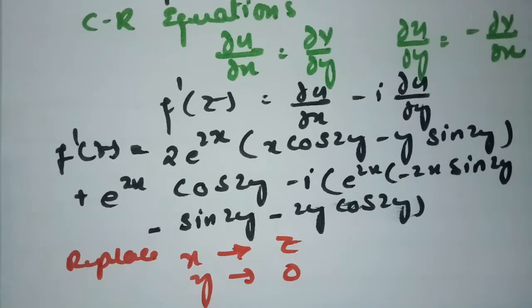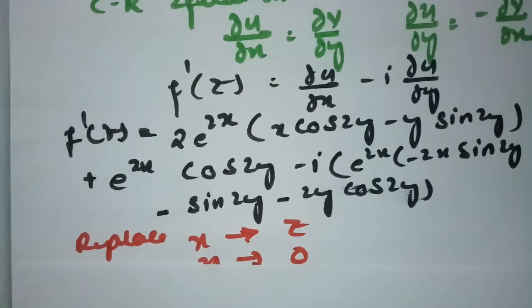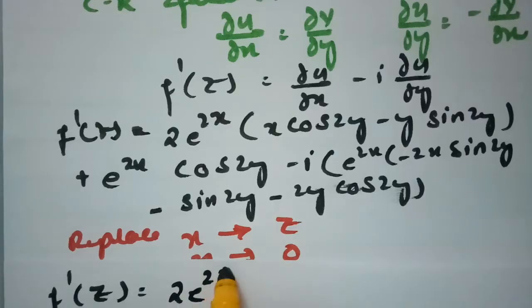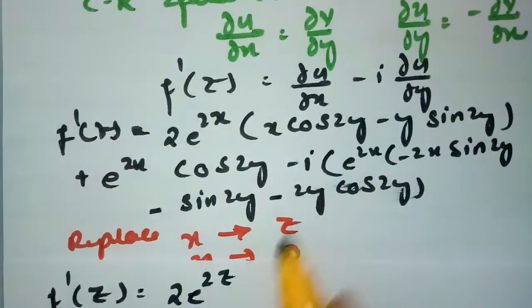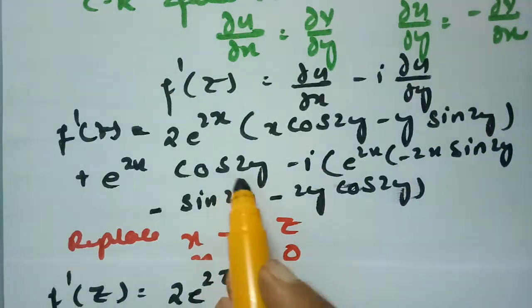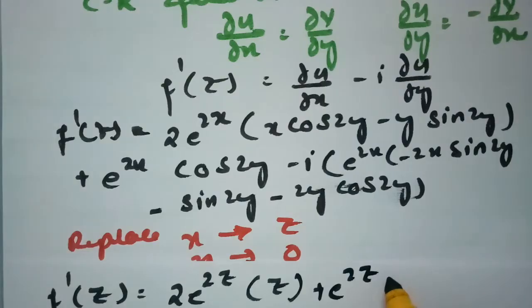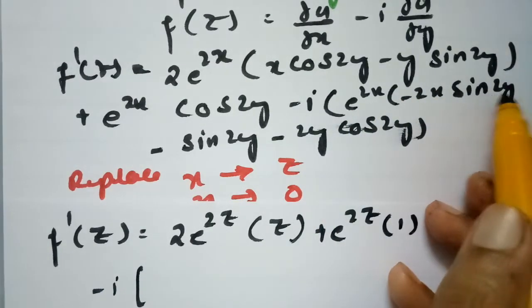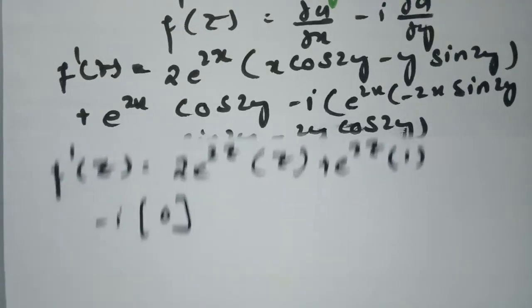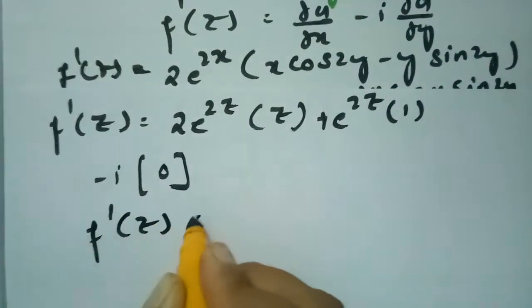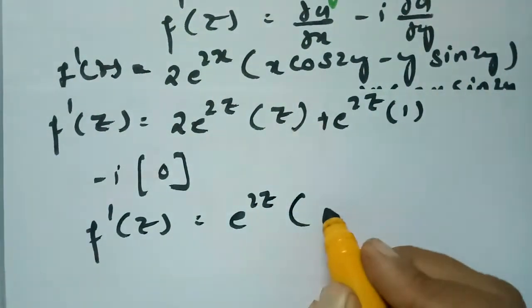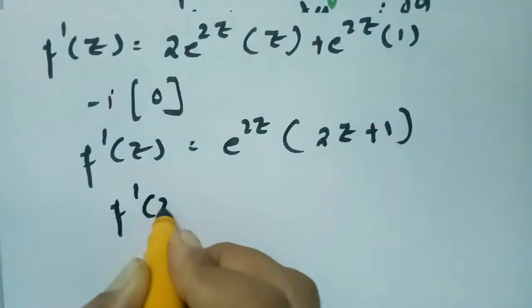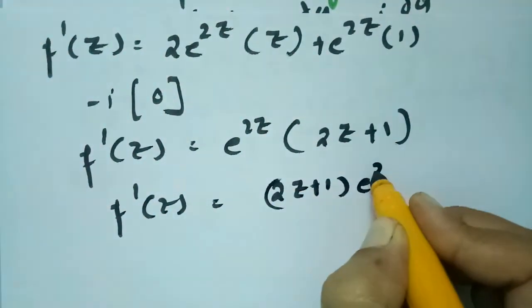Replacing x by z and y by 0: cos0 = 1, sin0 = 0. So f'(z) = 2·e^(2z)·z + e^(2z)·1 − i·(0). Taking e^(2z) common: f'(z) = (2z + 1)·e^(2z).